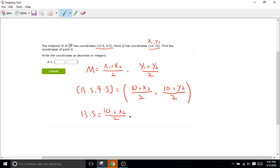Just like last time, we'll set the X is equal to each other and the Y is equal to each other. So we'll have 13.5 equals 10 plus X2 over 2. To get X2 by itself, we've got to get rid of the 2 on the bottom. So multiply both sides by 2. The 2s cancel out here. So 2 times 13.5 is just going to be 27 equals 10 plus X2. To get X2 by itself, we've got to subtract the 10 from both sides. 10s cancel out. So 27 minus 10 is 17, which is going to equal X2. So we have our coordinate there.